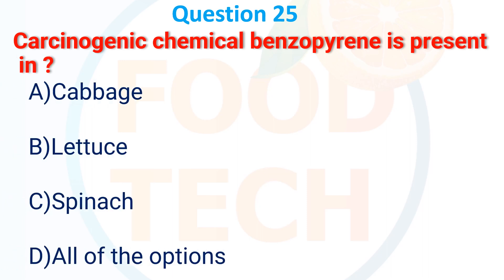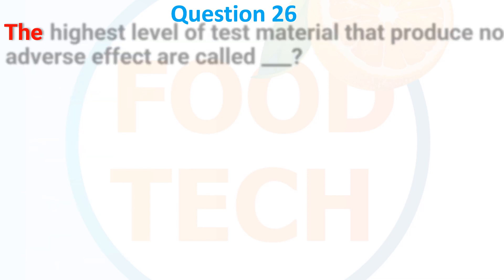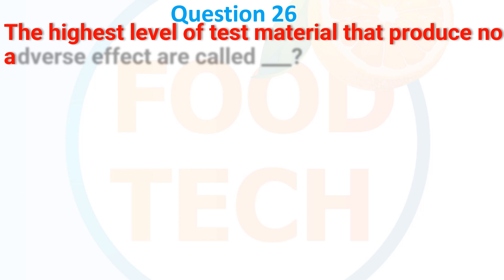Carcinogenic chemical benzopyrene is present in: A. Cabbage, B. Lactam, C. Spinach, D. All of the options. The answer is D. All of the options.